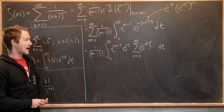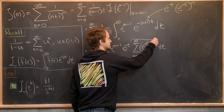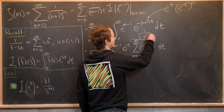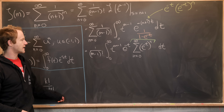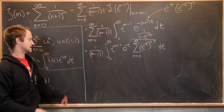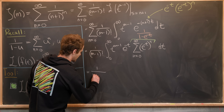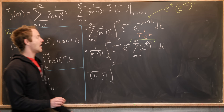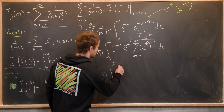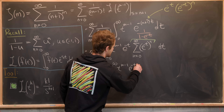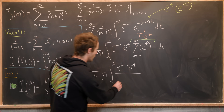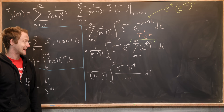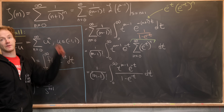That gives us 1 over m minus 1 factorial, times the integral from 0 to infinity of t to the m minus 1 times e to the minus t, times the sum from n equals 0 to infinity of (e to the minus t) to the n dt. Applying the geometric series formula rewrites the sum as 1 over 1 minus e to the minus t, leaving us with 1 over m minus 1 factorial times the integral from 0 to infinity of t to the m minus 1 times e to the minus t, divided by 1 minus e to the minus t, dt. That's already a satisfying integral identity for the Riemann zeta function.